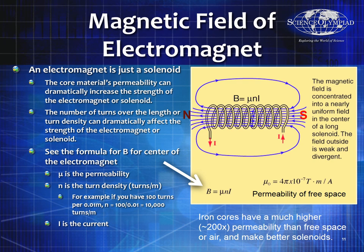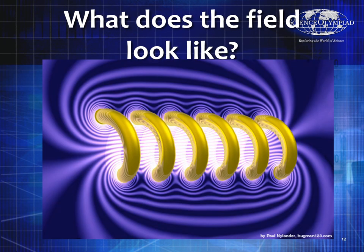Just remember, electromagnet is another name for a solenoid. It's the number of turns over the length — the turn density — that can dramatically affect the strength of the electromagnet, or you can change it with current, or you can change it with a core material. Somebody came up with a particular GIF which shows what a solenoid's magnetic field generally looks like. Each turn forms circles, but when the circles are put right next to each other, that's how they form the big loops that look a lot like a normal magnetic field from a regular magnet.